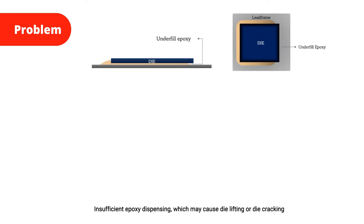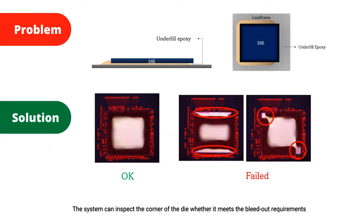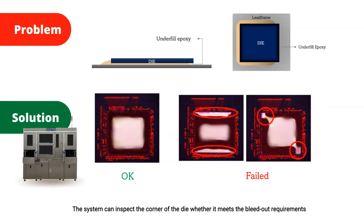Insufficient epoxy dispensing may cause die lifting or die cracking. The system can inspect the corner of the die to determine whether it meets the bleed-out requirements.